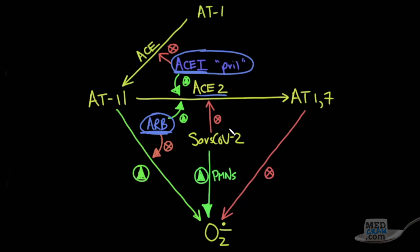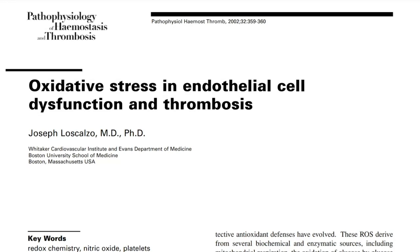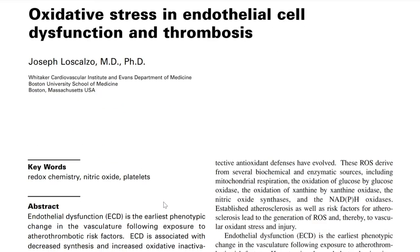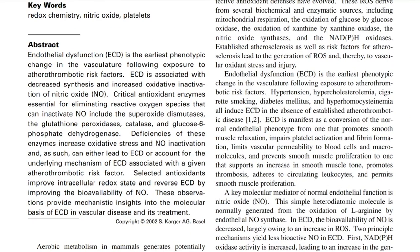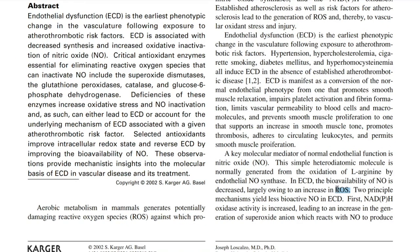The bottom line is that when you have a SARS-CoV-2 infection, you're going to get increased endothelial dysfunction. We've looked at this paper published almost 20 years ago out of Boston University School of Medicine. It describes how all of these things come together with endothelial dysfunction and reactive oxygen species. If you lose protective mechanisms like superoxide dismutases, glutathione peroxidases, catalase, and glucose-6-phosphate dehydrogenase, then you're going to get increased oxidative stress.